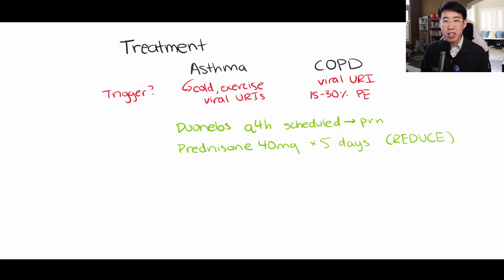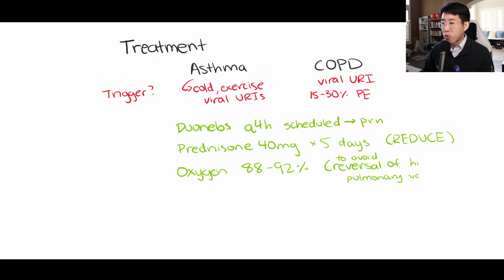And then afterwards, you're going to give them oxygen as needed for a goal sat of 88 to 92%. The reason we only target a goal of 88 to 92% is also a very common question. And you may have been told that this is because high levels of oxygen will reduce the respiratory drive in patients with COPD, but this is actually not the primary reason for avoiding high oxygen in these patients. It's actually due to a reversal of hypoxic pulmonary vasoconstriction.